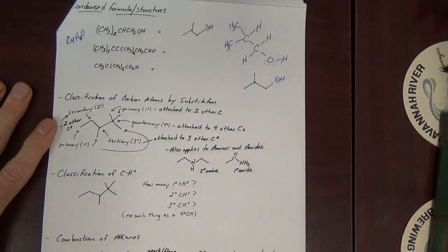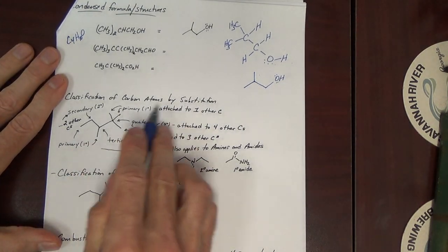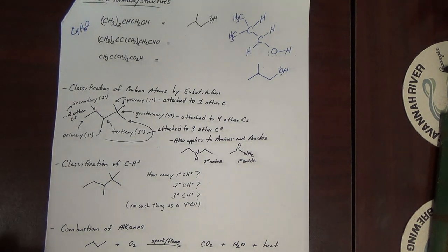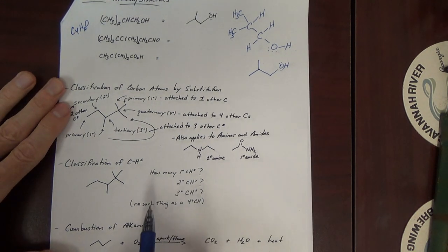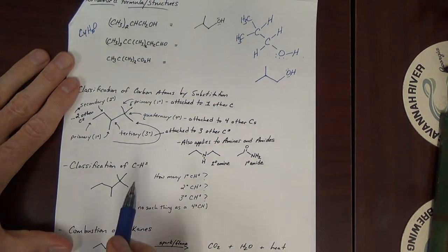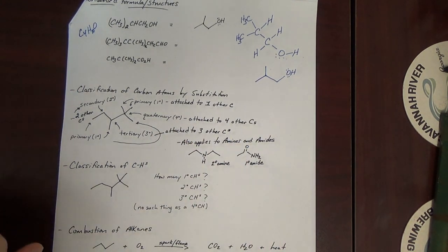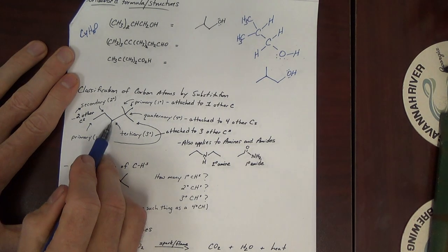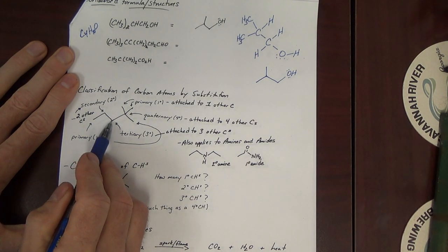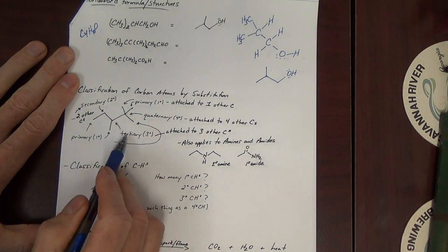Next on this page, let's look at classification of carbon atoms by substitution. Now this is a lot like we did for amines and amides. A primary amine, the nitrogen is bonded to one carbon. A tertiary amine, the nitrogen is bonded to three carbons. We can do the same thing for carbons. If a carbon is bonded to three carbons, we can call that carbon tertiary. And indeed, right here is a tertiary carbon. That carbon is bonded to three other carbons. And we call it tertiary.